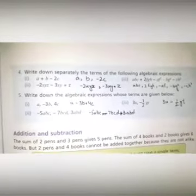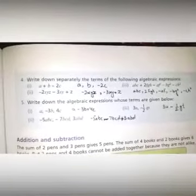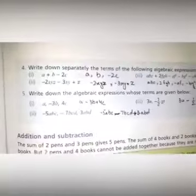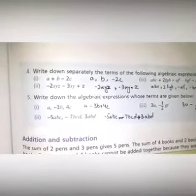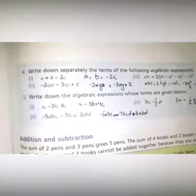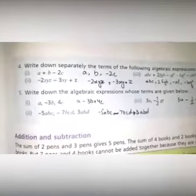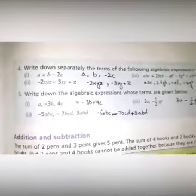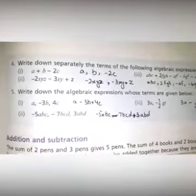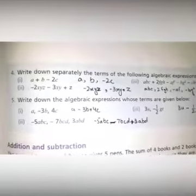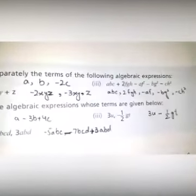down separately the terms of the following algebraic expressions. Part a, you can see the question: a plus b minus 2c. Simply put commas between the values: a comma b comma minus 2c. For part 2, you can see the answers. You simply put the commas between the values.